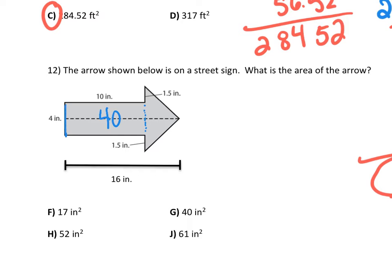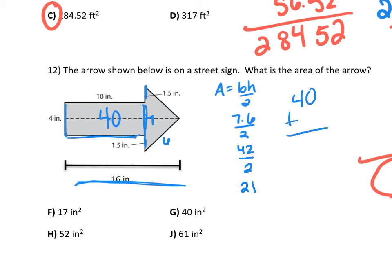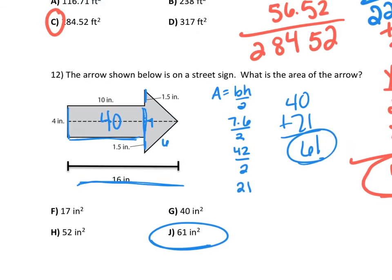But if I know this is 4, then this is 4 right here. So 1.5 and 1.5, so the base is 7. This whole thing is 16, but this part is 10. So this part right here would be 6. So I would say base times height divided by 2, 7 times 6 divided by 2. 7 times 6 is 42, divided by 2 is 21. 40 and 21 is 61. And that is our answer for number 12. You should have two pieces right there. We should have added those together.